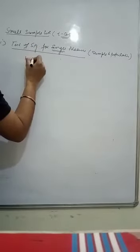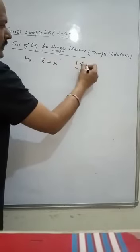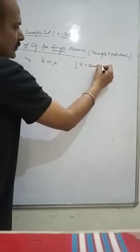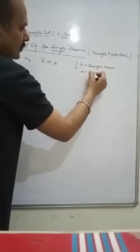Now, in this case, the null hypothesis generally will be x bar is equal to mu, where x bar denotes the sample mean. This is a standard notation. Mu stands for population mean.